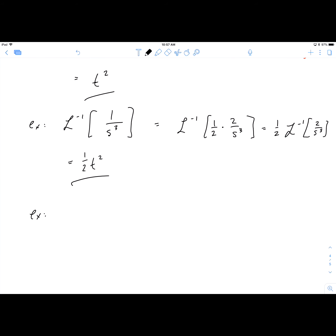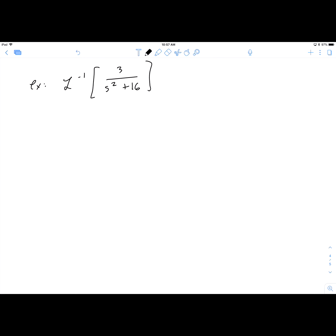Say, for instance, we had something like the Laplace transform of 3 over s squared plus 16. So again, you would look through your table and see which transform has this form, or is the closest to this form.